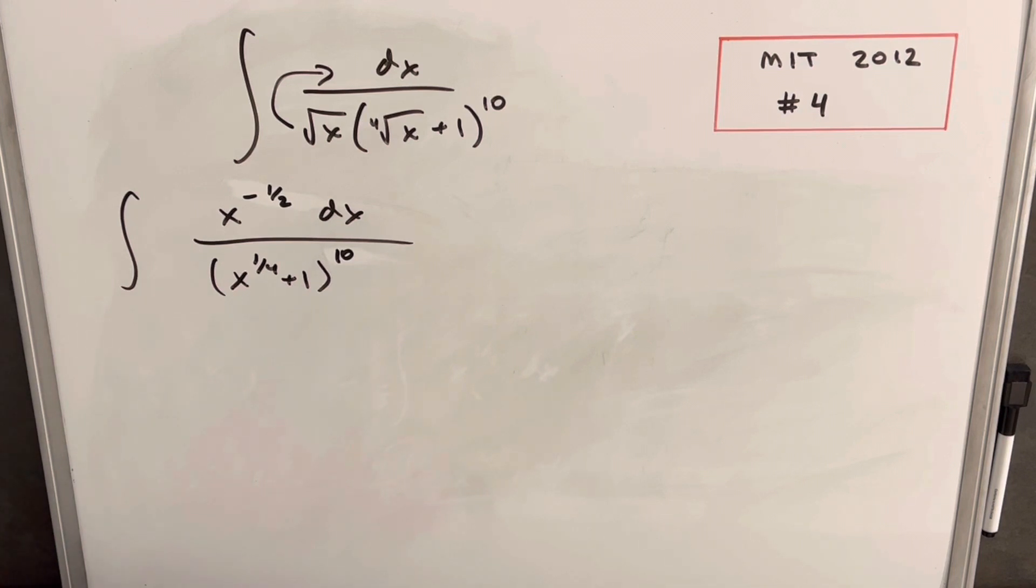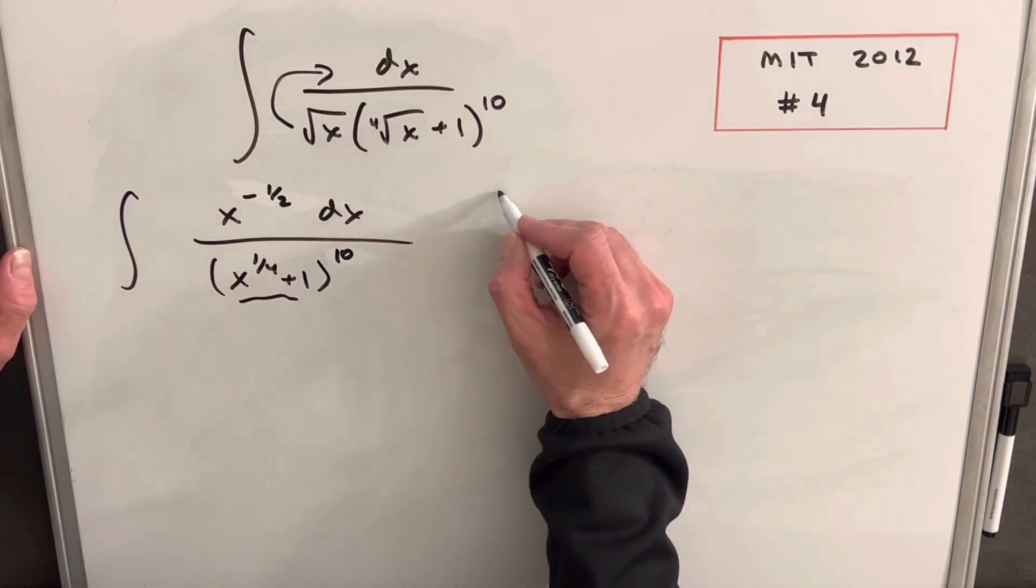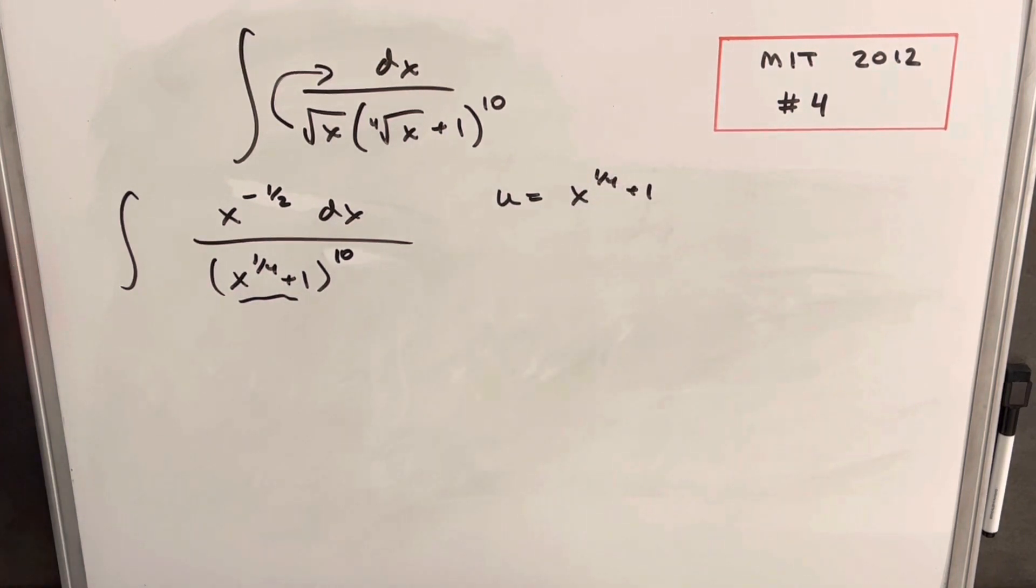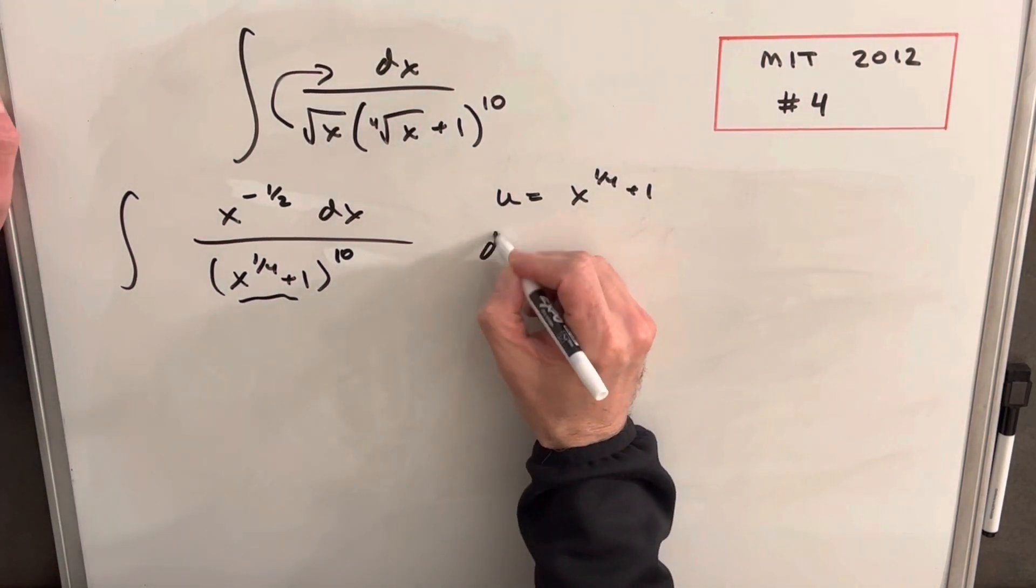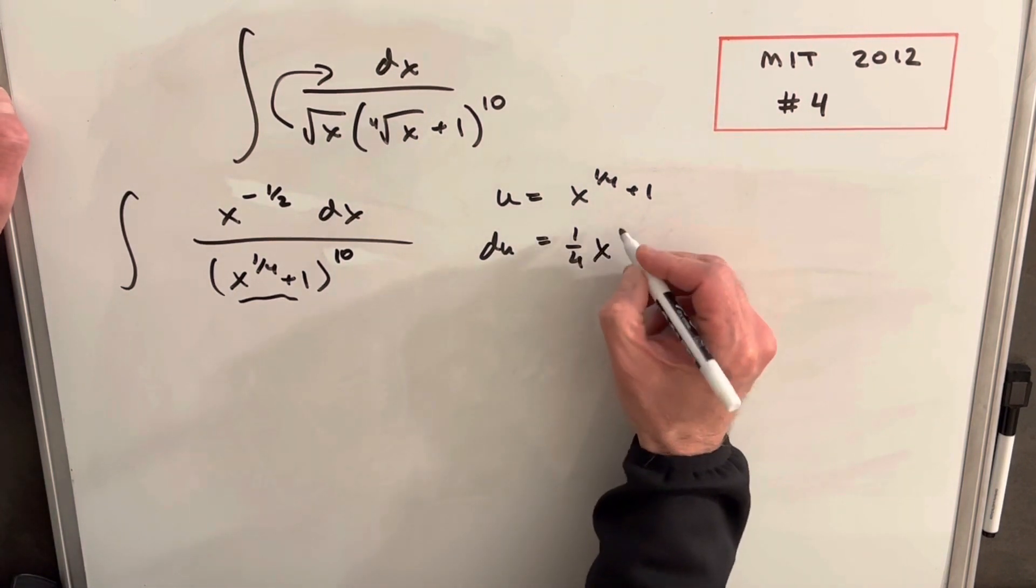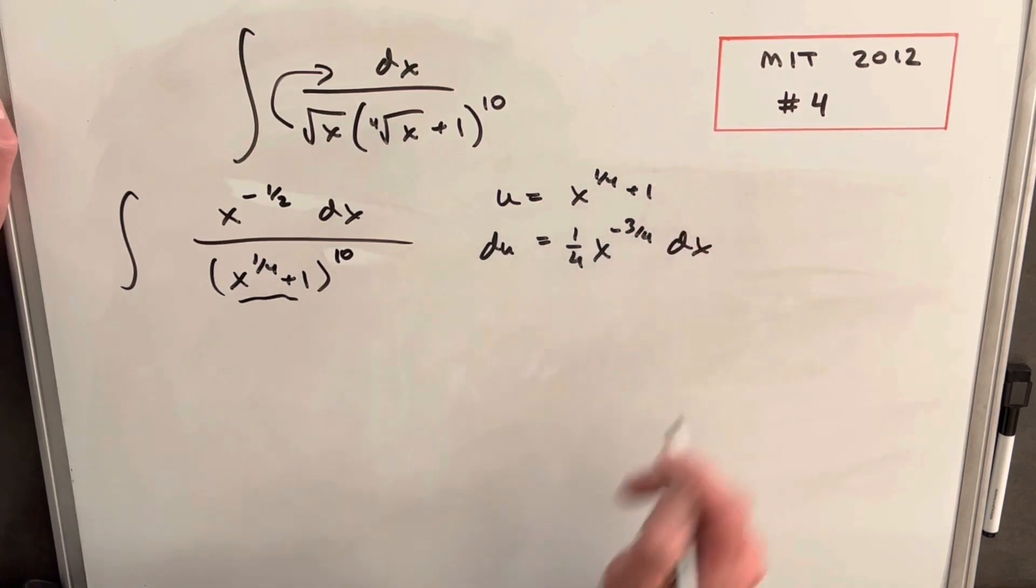And then for the u-substitution, this is tricky because it's not going to quite work out as clean as we'd like. I'm going to try to make this my u and just see if we can make that work. So let's call u equals x to the one-fourth plus 1. And then our du, just taking the derivative with the power rule, is going to be 1 over 4 x to the minus three-fourths dx, derivative of 1 is 0.